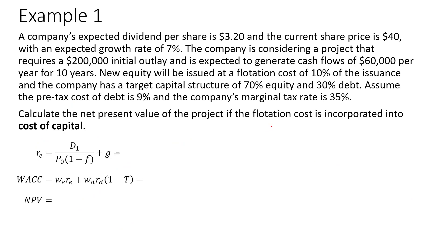Let's see how the flotation cost can be incorporated into project evaluation based on the two approaches. A company's expected dividend per share is $3.20 (D sub 1), the current share price is $40 (P sub 0), and the expected growth rate is 7%. The project requires a $200,000 initial outlay and is expected to generate cash flows of $60,000 per year for 10 years. New equity will be issued at a flotation cost of 10% based on the issuance amount. The company has a target capital structure of 70% equity and 30% debt, a pre-tax cost of debt of 9%, and a marginal tax rate of 35%.